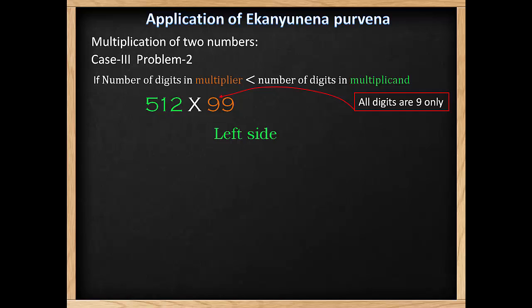We can find out the left hand side, which will be the multiplicand minus 1, which will be 512 minus 1, giving us 511.